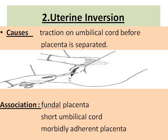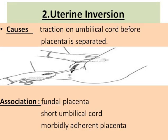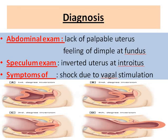Another problem is uterine inversion. The cause is basically pulling upon the umbilical cord before the placenta is separated. The placenta is present on the fundus side — the uterus is divided into a body, the fundus, and the cervix. If the placenta is situated fundally and we pull upon it, there would be uterine inversion, especially if the umbilical cord is short or there is morbidly adherent placenta.